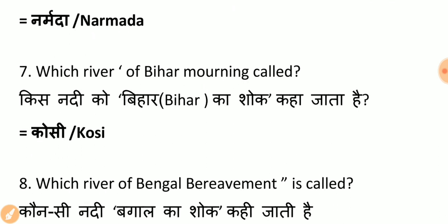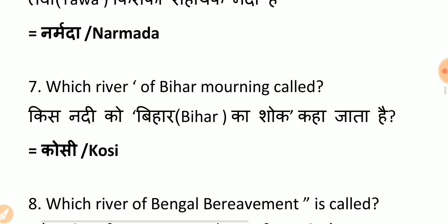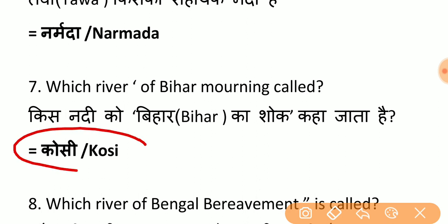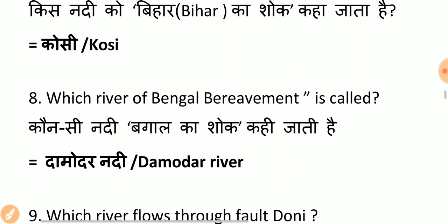Which river is called the Sorrow of Bihar? This question has been asked very frequently in exams. Remember: Kosi river is called the Sorrow of Bihar. We have also taken questions about rivers called the sorrow of different states — remember these as they are very important from the exam point of view.